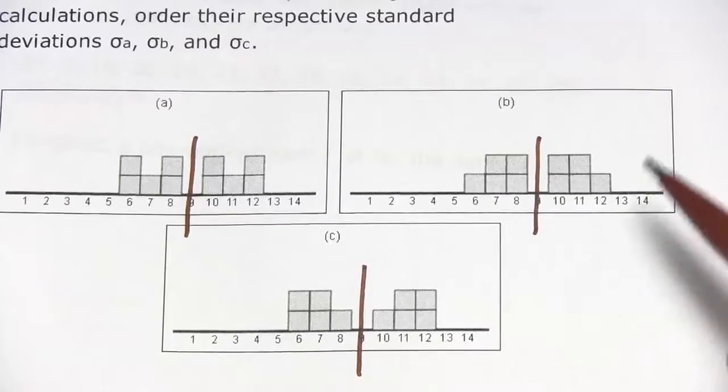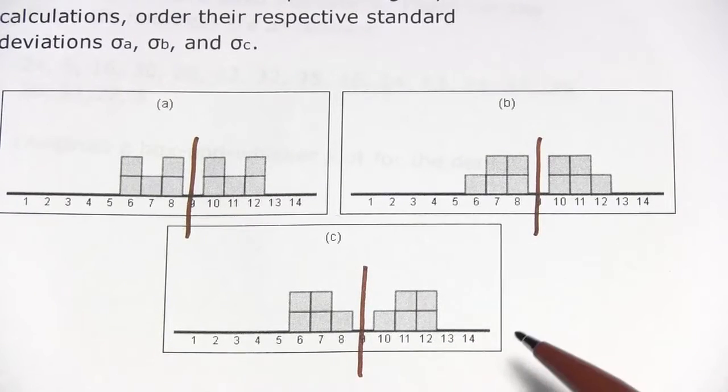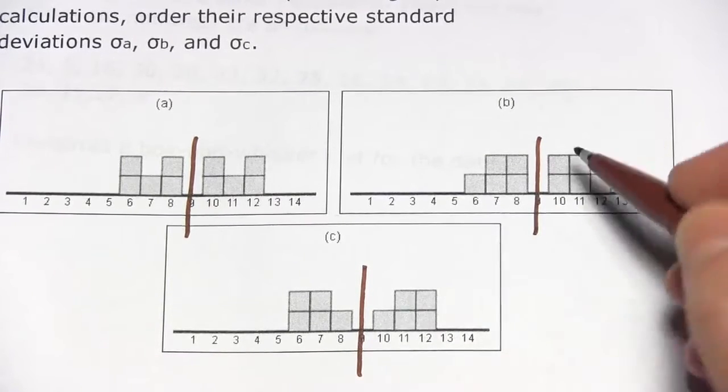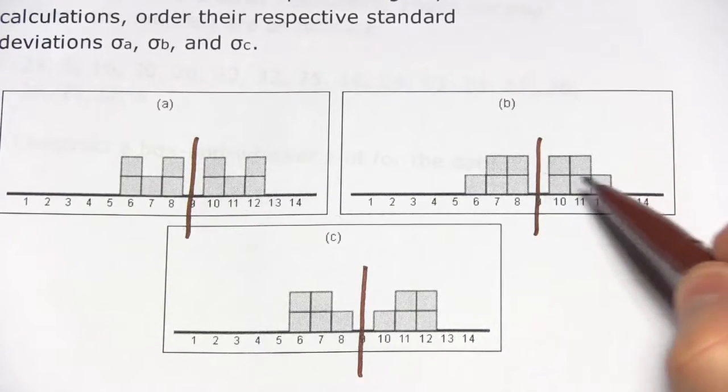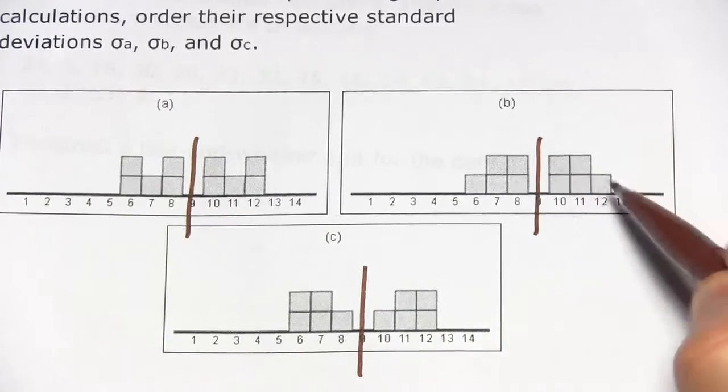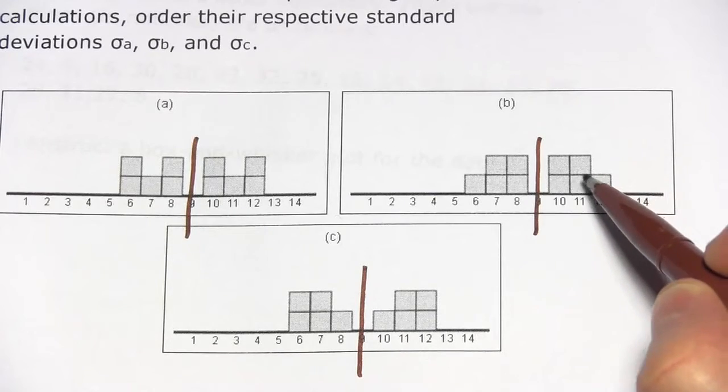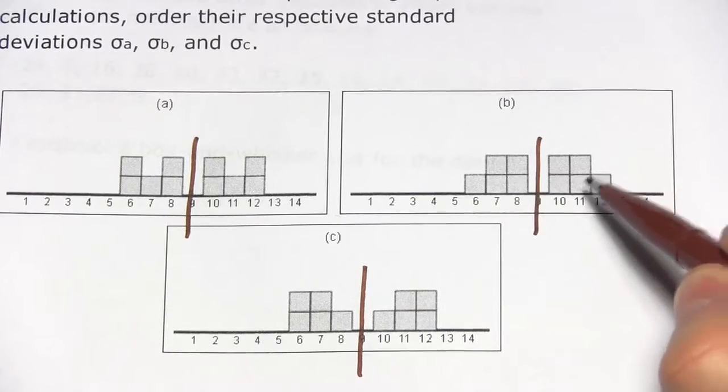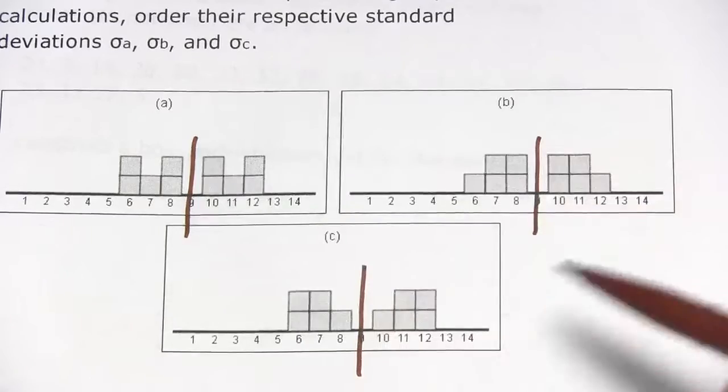So let's look at the comparisons we can make between these three diagrams. In B you have the data all kind of scrunching towards the middle towards 9 towards the mean. So this has got to have the smallest standard deviation of this group.